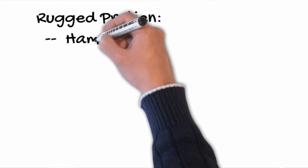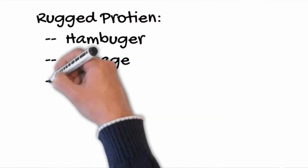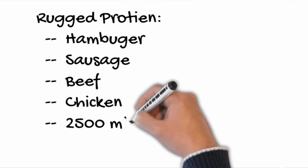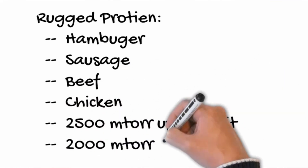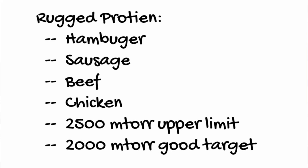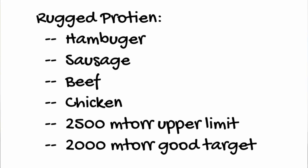There are certain pressures above which you don't want to go — 2,500 millitorr — but for certain products you probably want to keep it even lower. For rugged products like meats — chicken, hamburger, prepared meals — you're probably safe to go up to 2,500 millitorr, provided the meat isn't really fatty. If you have really fatty meat and the shelves get a little too warm, you might actually vaporize some of the fat out of your meat and deposit it in your ice, which can cause a bit of a mist.